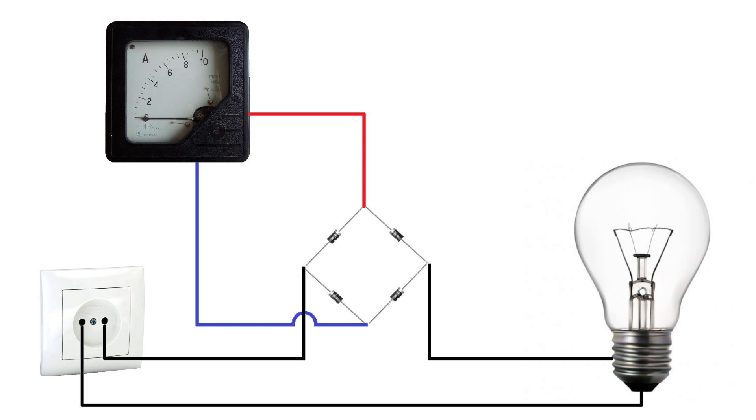And an ammeter is connected to its output plus and minus. Thus, alternating current will flow through the bulb, and direct current through the ammeter. The current that the ammeter will show will flow throughout the circuit.